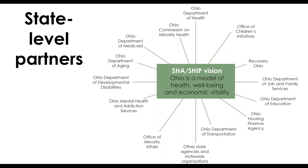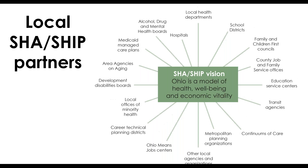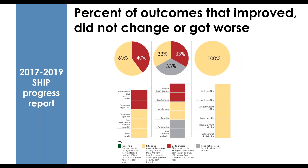Throughout this process, there's a parallel assessment happening with several touch points between the SHIP and the Maternal and Child Health and Maternal and Infant Early Childhood Home Visiting Assessment and Plan, also known as MIECHV. The purpose of the SHIP is to get us all rowing in the same direction to improve population health in Ohio. That's why it's important for us to be concise and prioritize toward common goals. We know that prioritization is challenging work, but it's necessary if we're going to be strategic about improving outcomes.